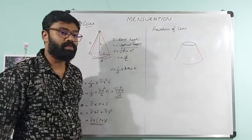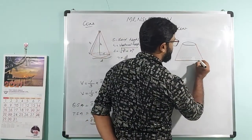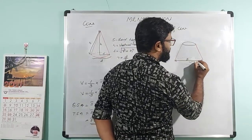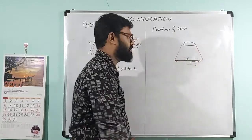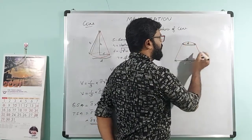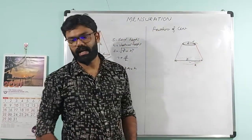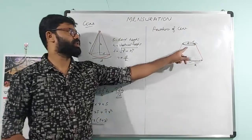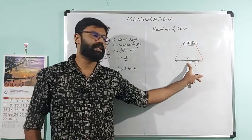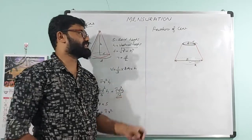In this frustum of cone, one dimension is the bottom diameter, denoted capital D. The bottom radius is capital R. The top has small letter d for diameter and small letter r for radius.